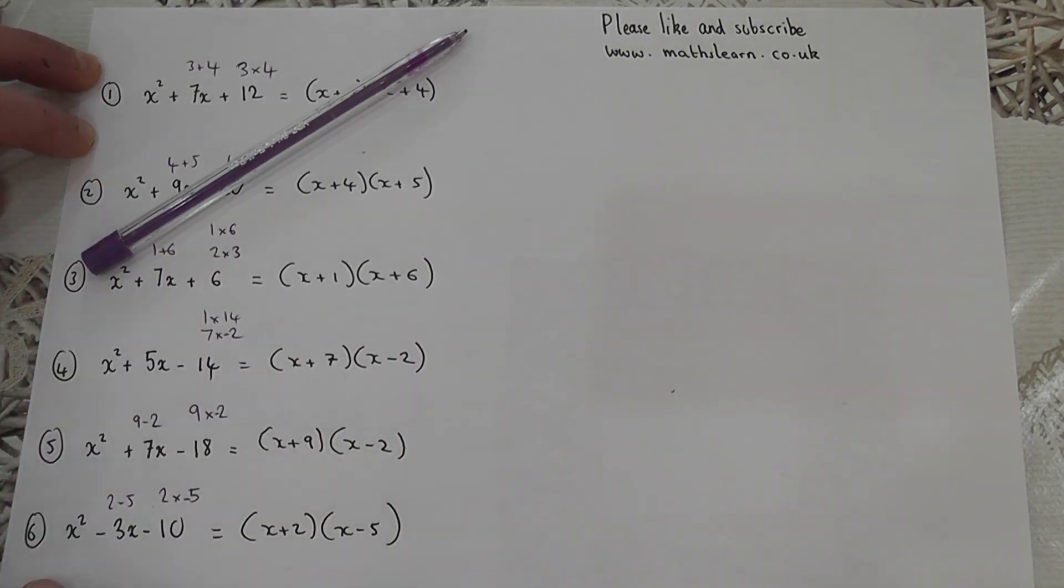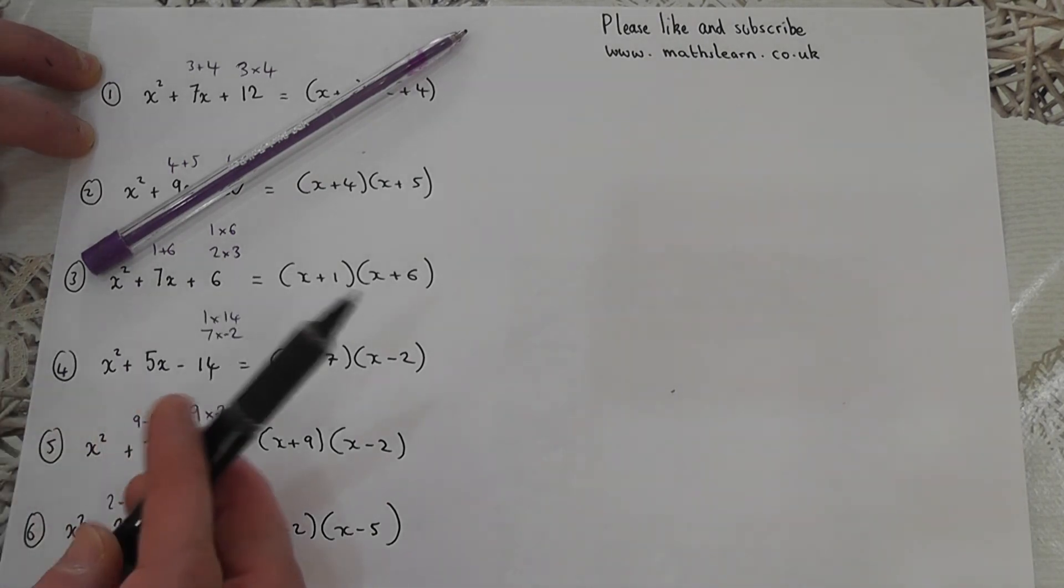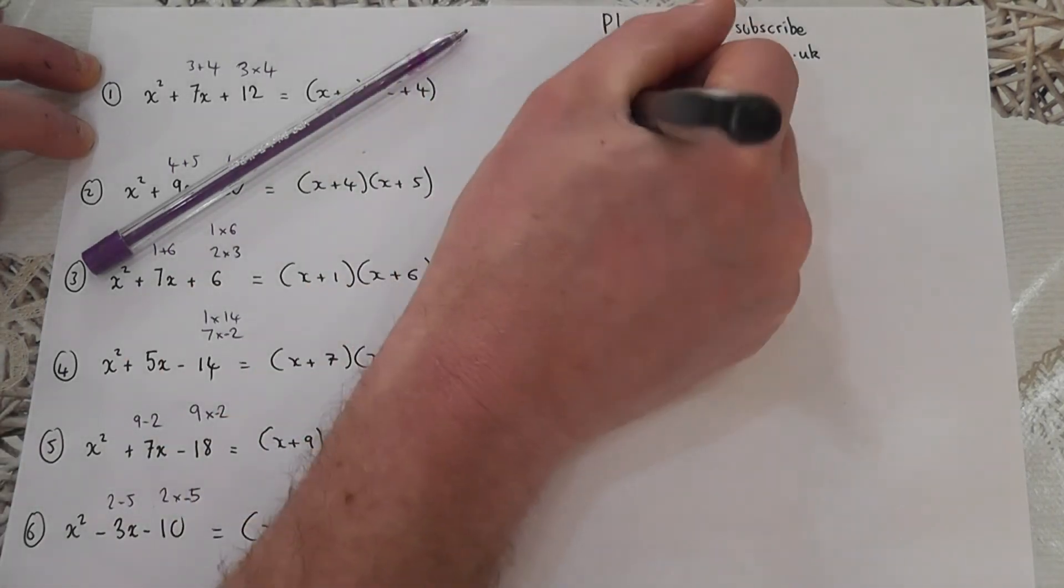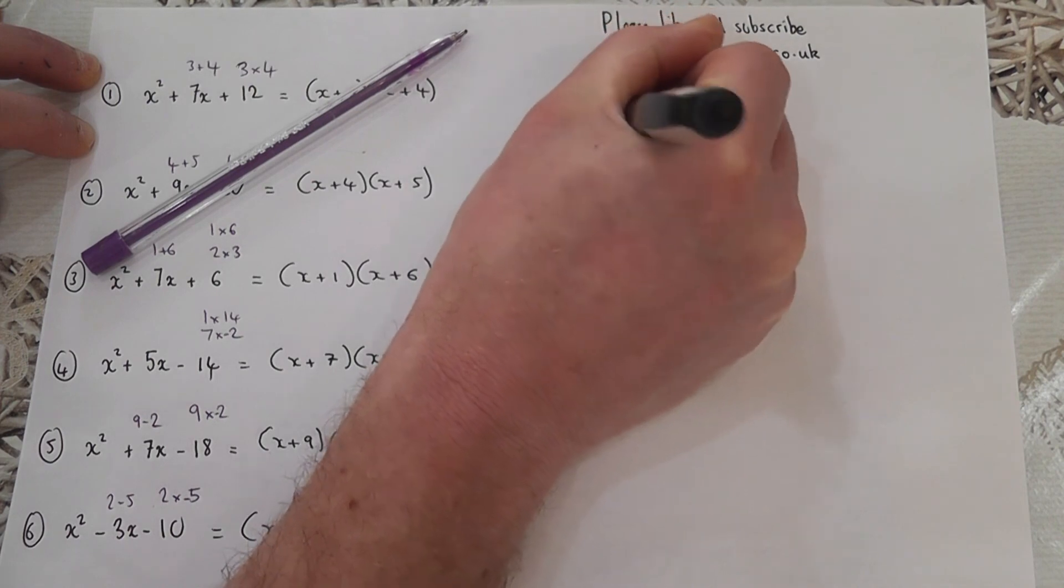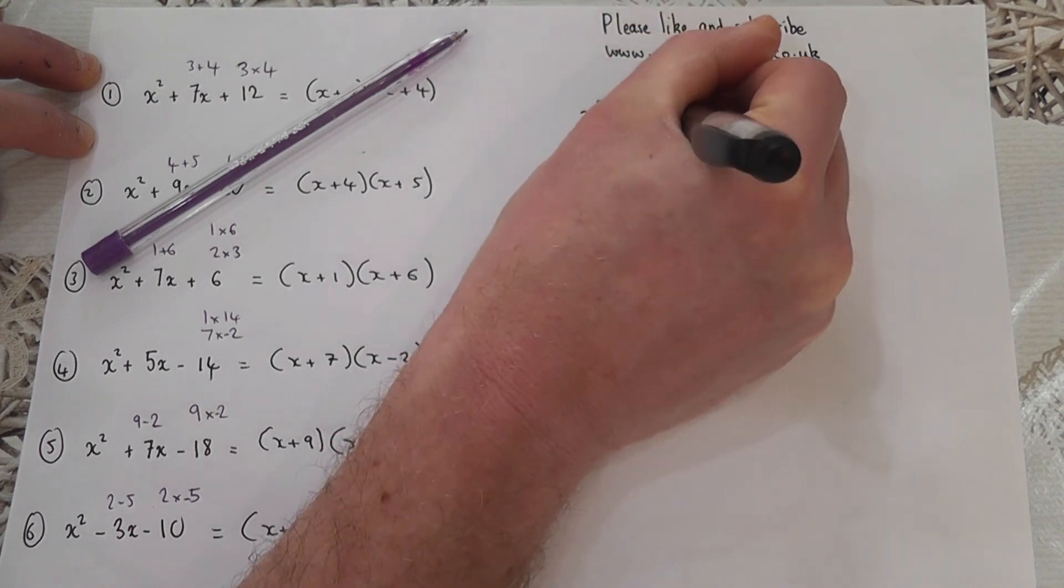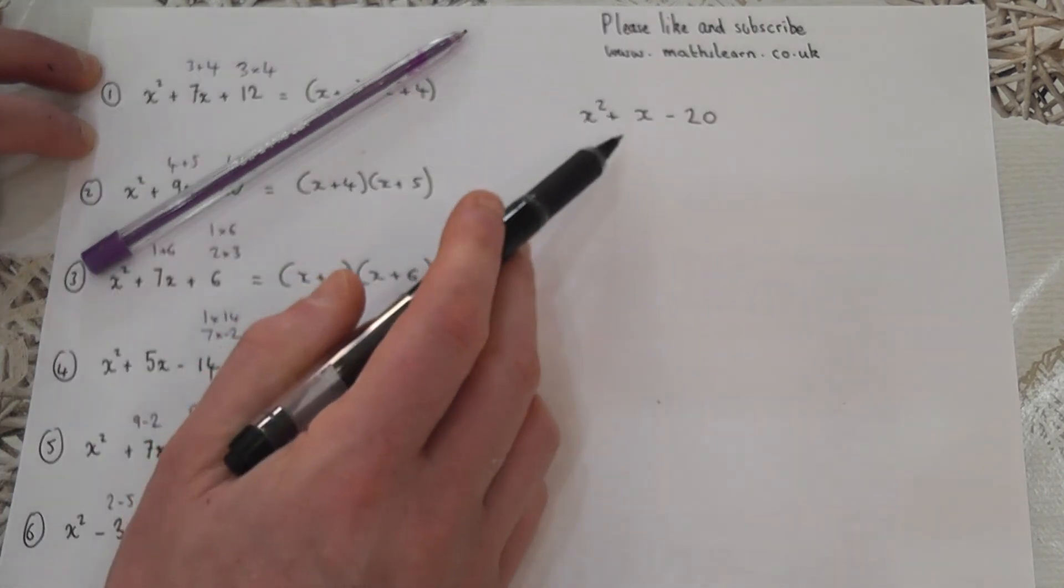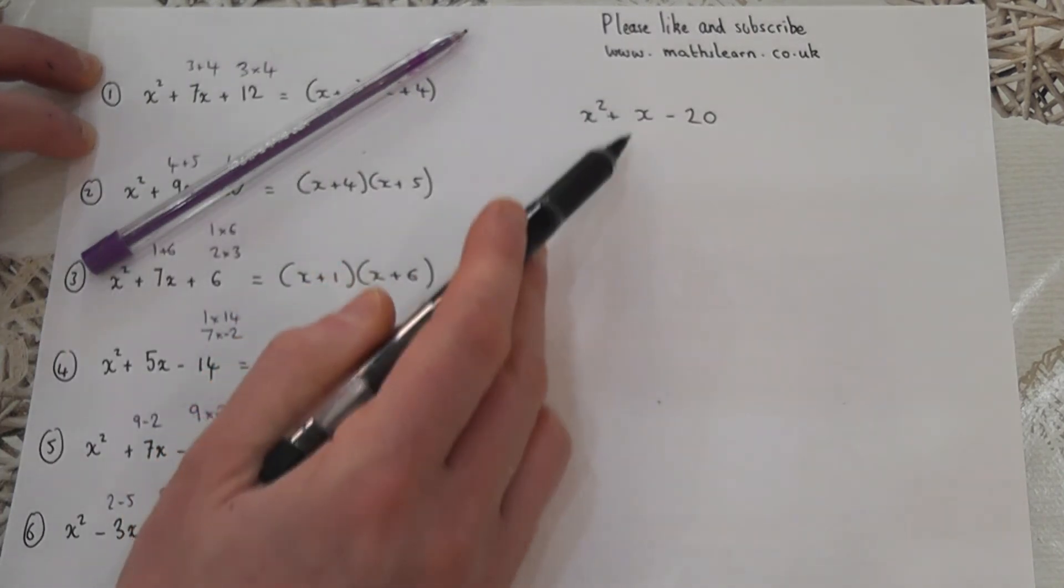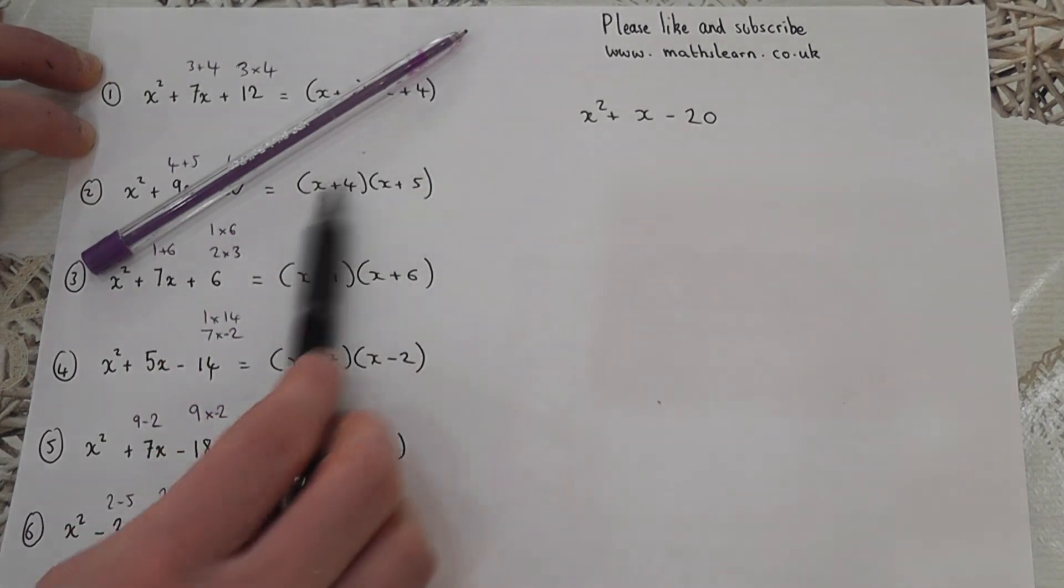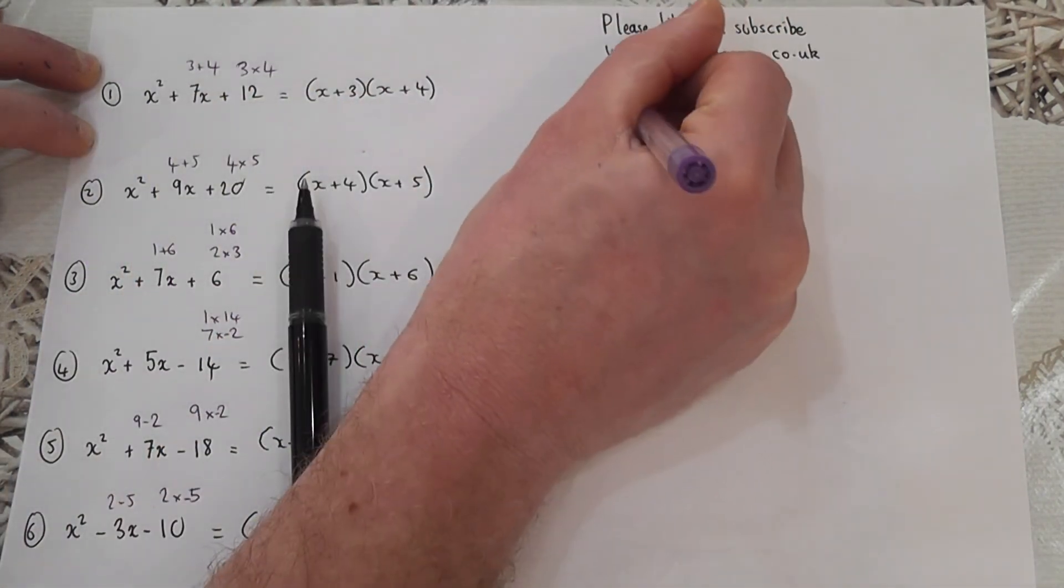That reviews the main skills in double bracket factorizing. Four extension questions which can cause a few problems. The first one is x squared plus x minus 20. When there's just an x here, that can confuse people. The trick here is to imagine that as being 1x.